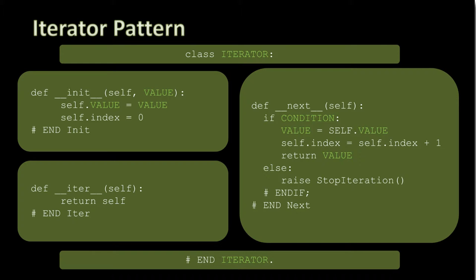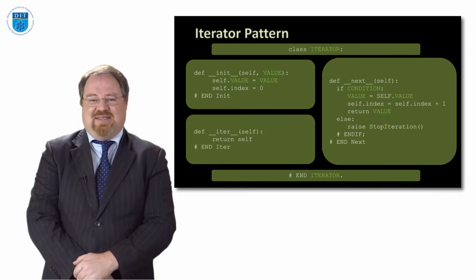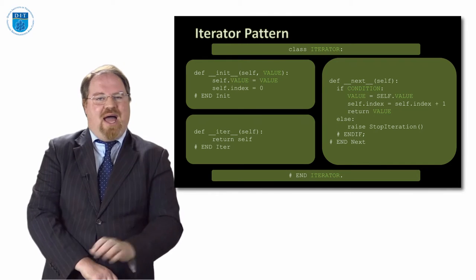How we define a next in general would look something like this. Based on some condition, probably while we're at some point, set the value to the current value, add one to the index because we're counting, and return that value. Otherwise raise an exception with StopIteration, which means we've reached the end of the list. So that's the general pattern.